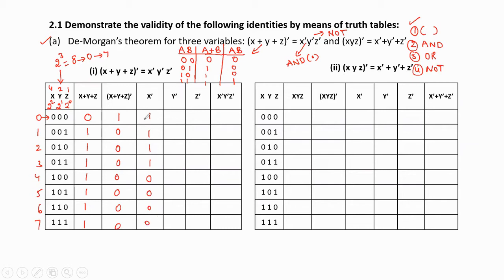ȳ is the complement of y: 1,1,0,0,1,1,0,0. z̄ is the complement of z: 1,0,1,0,1,0,1,0. Now x̄ȳz̄ means the AND of these three complemented values. When all inputs are 1 the output is 1; if any input is 0 the output is 0, giving all zeros except the first row: 1,0,0,0,0,0,0,0.